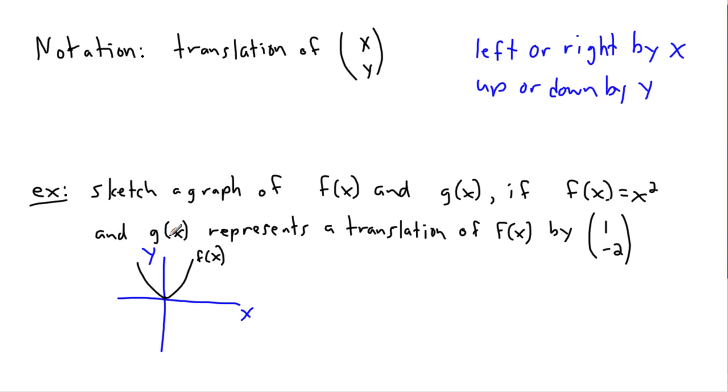Now what I want to do is also draw g of x, which is a translation of f of x by this. This notation is a little bit strange because this one is not opposite to what you think. This means left or right by x, so a plus 1 means right by 1, and it means we do down by 2 because this is negative 2. If it's left it's a minus, right is a plus, up is a positive, down is a minus.